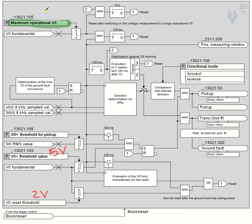In the previous session we discussed that if the system is a radial system, we give 3 volts as a maximum operational zero sequence voltage. But if we have a ring or a mesh type of system, like if you have bus A, bus B and C connected as a mesh,